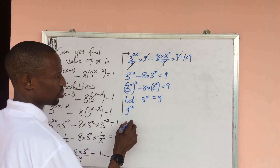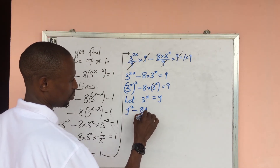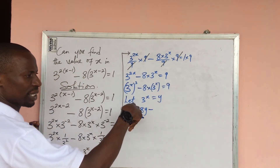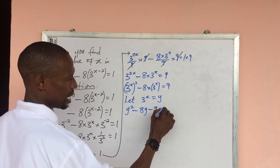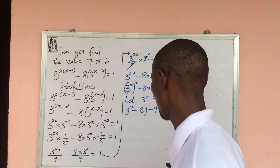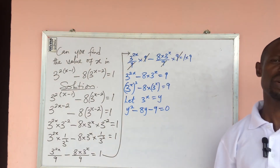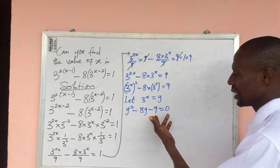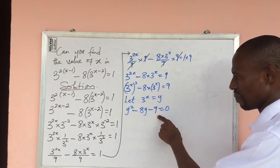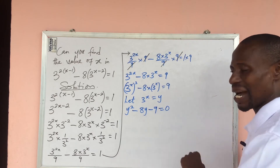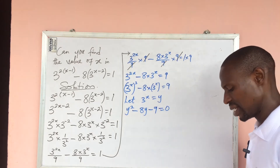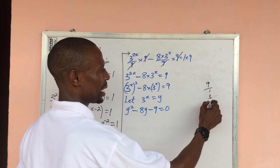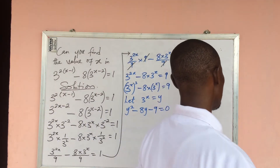Substituting gives us: y squared minus 8y minus 9 equal to 0. This is our quadratic equation, which we will solve by the factorization method. We need two numbers that multiply to give minus 9 and add to give minus 8. Let's find all the factors of 9.